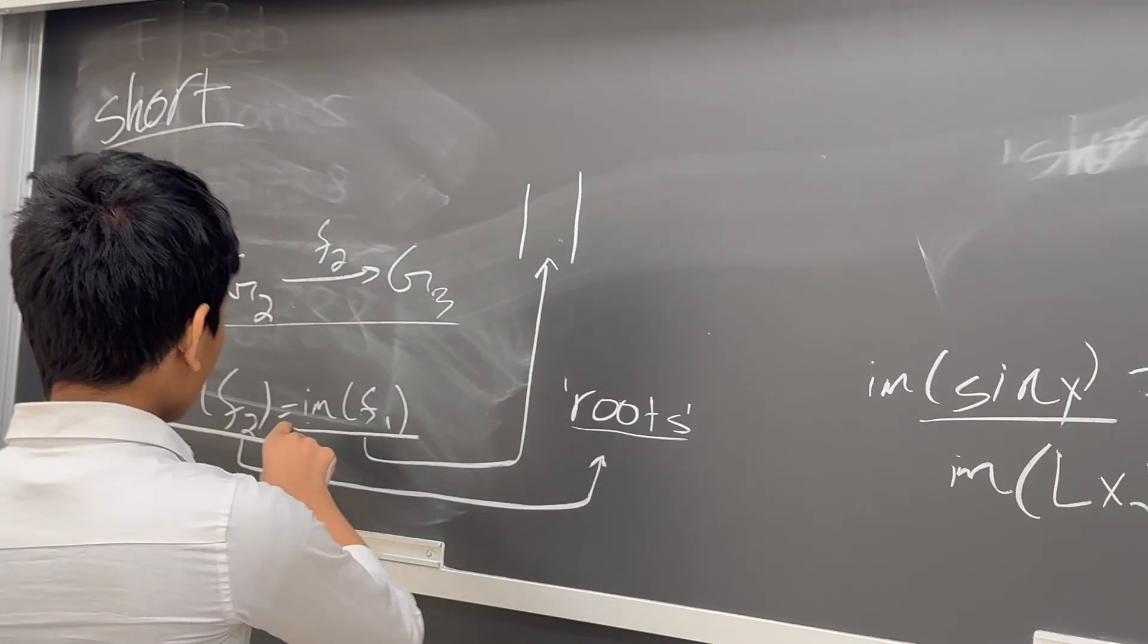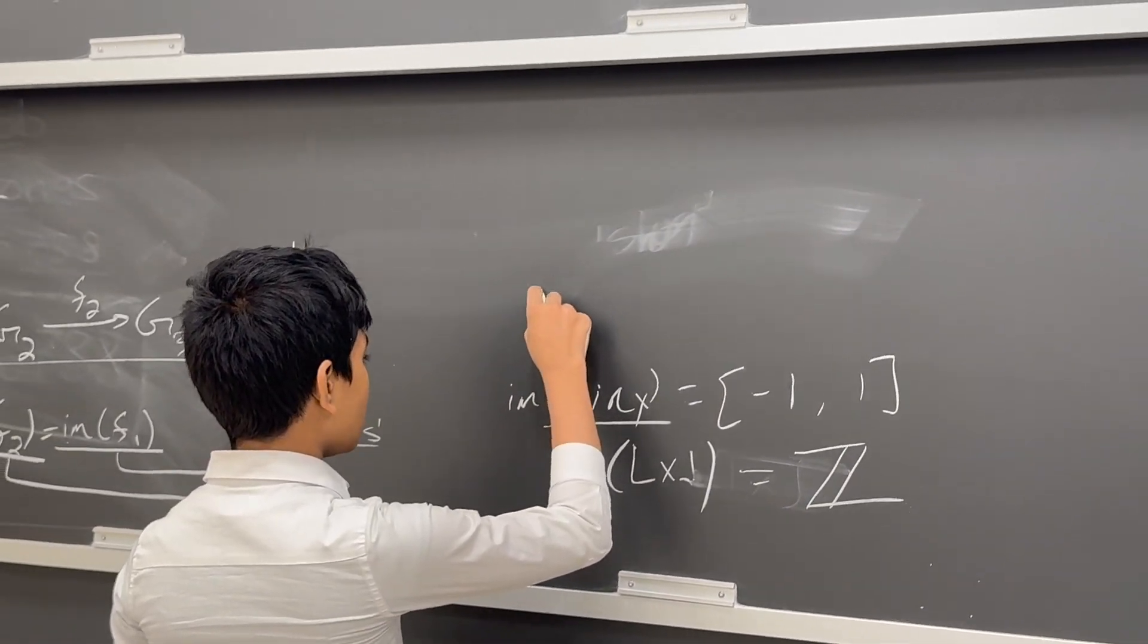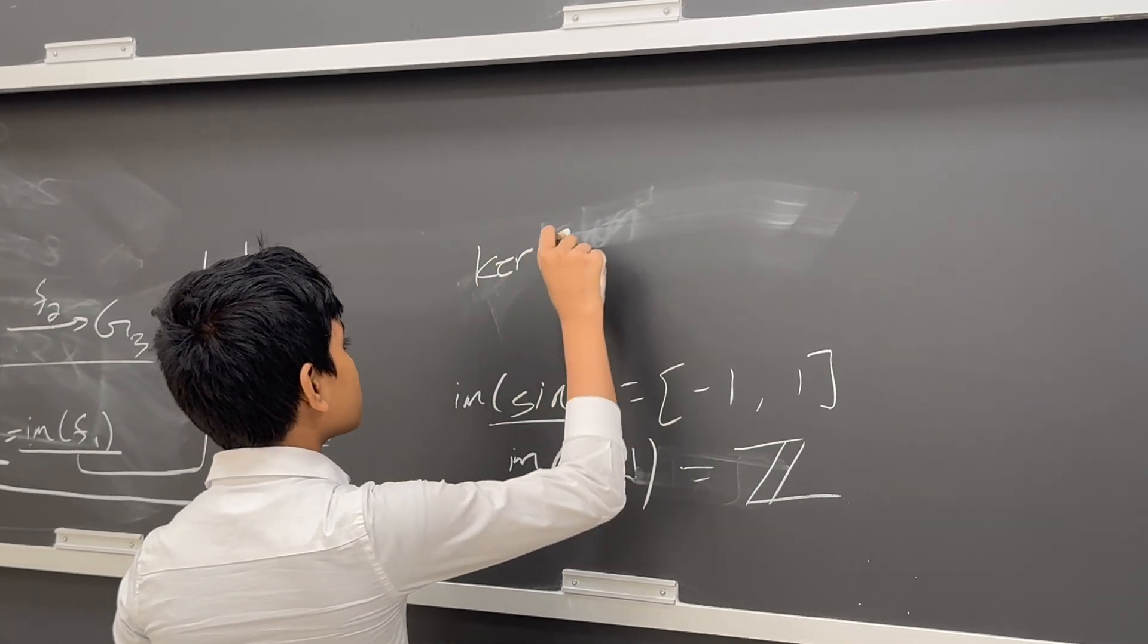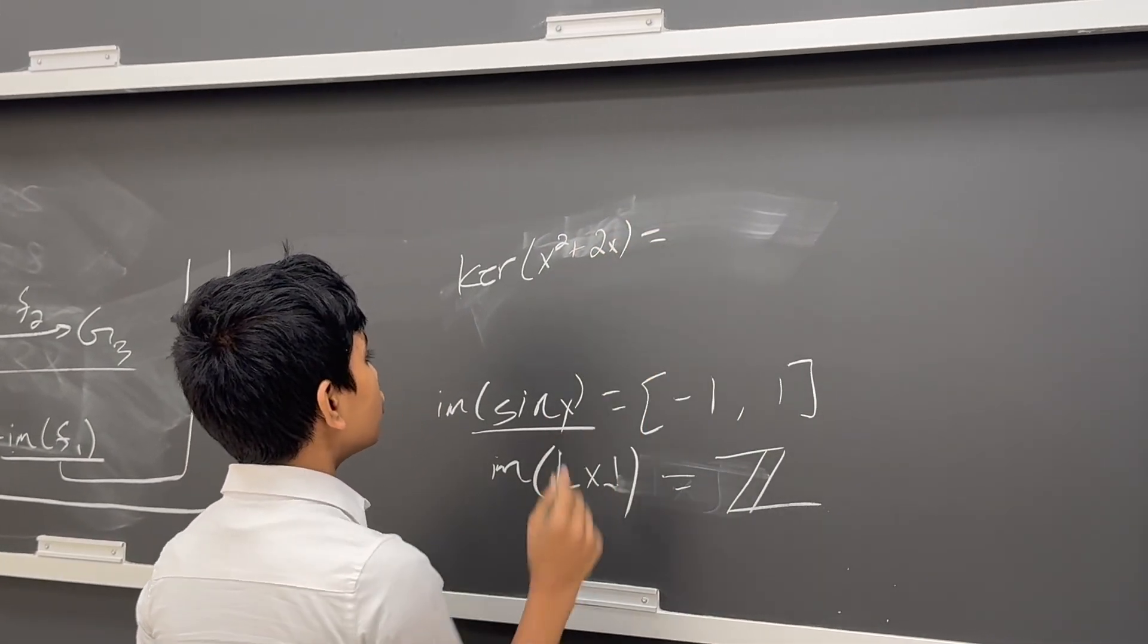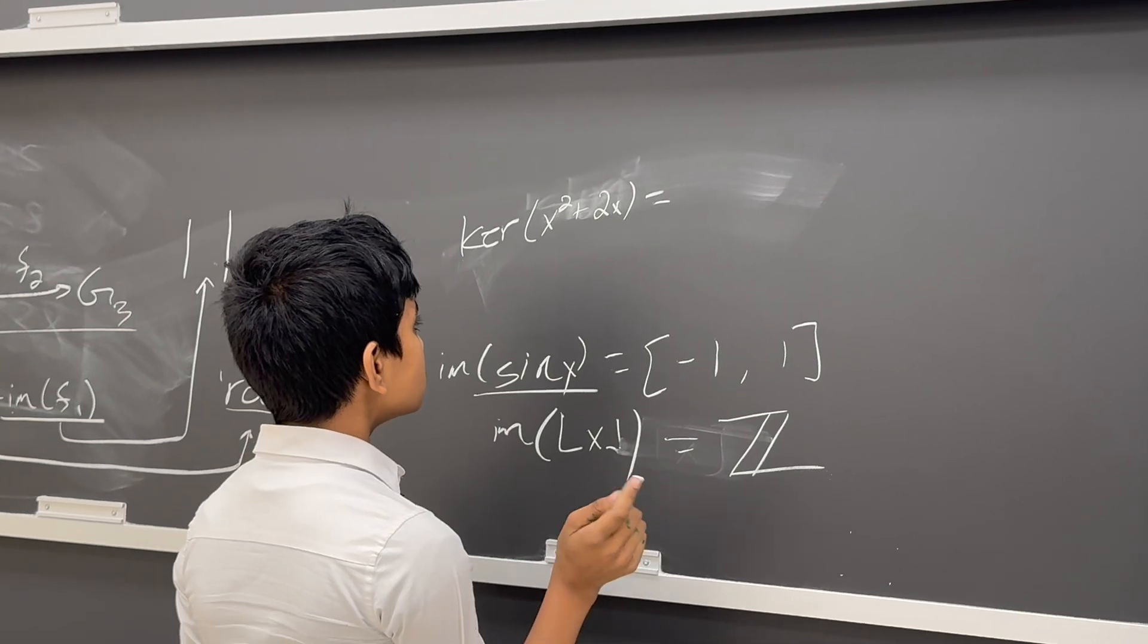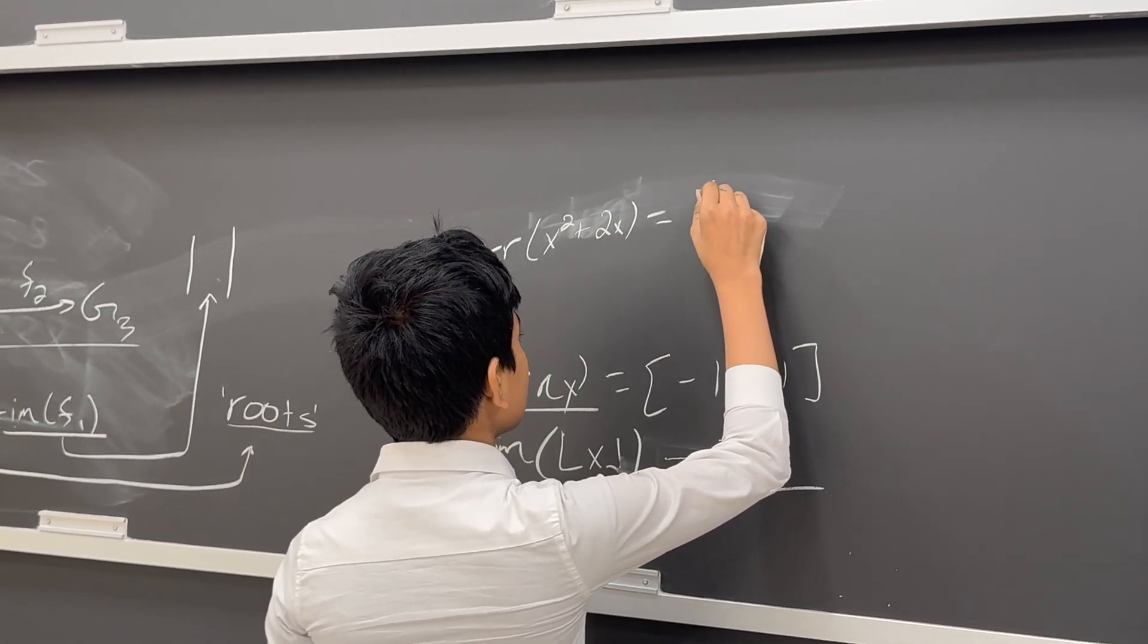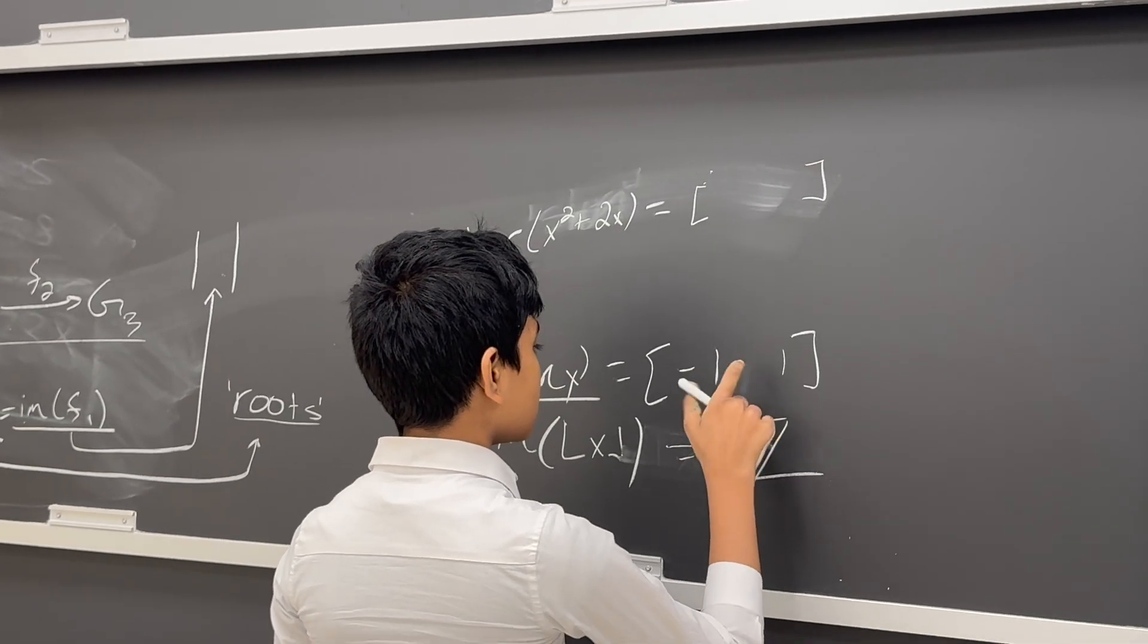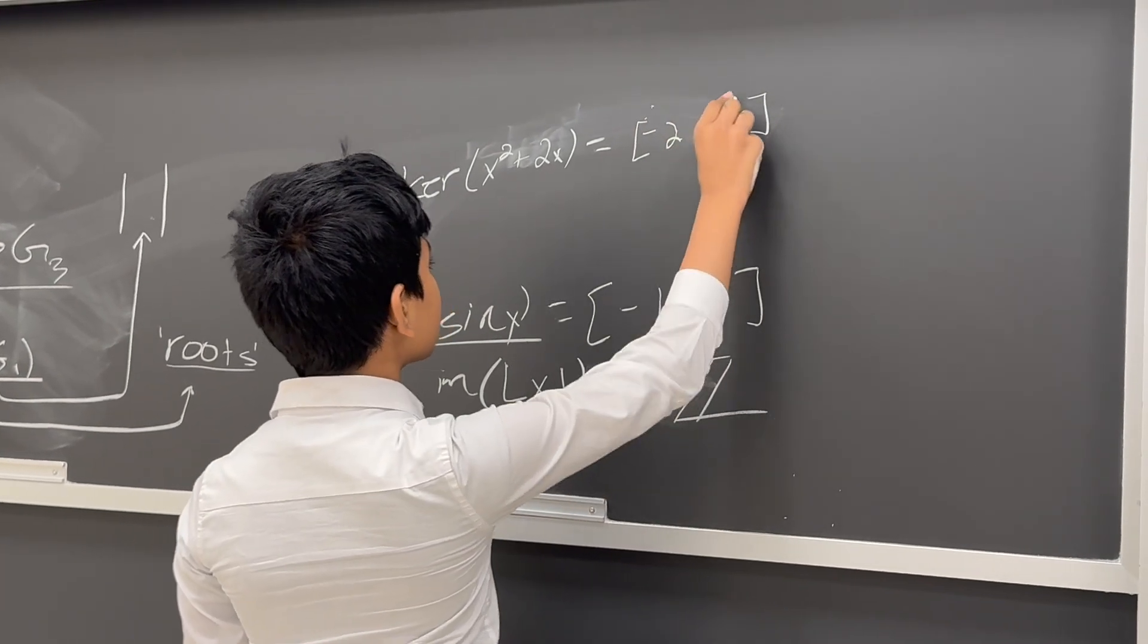So what about the kernel? The kernel of, let's say, x squared plus 2x is equal to simply two objects. So it's the set of minus 2 and 0.